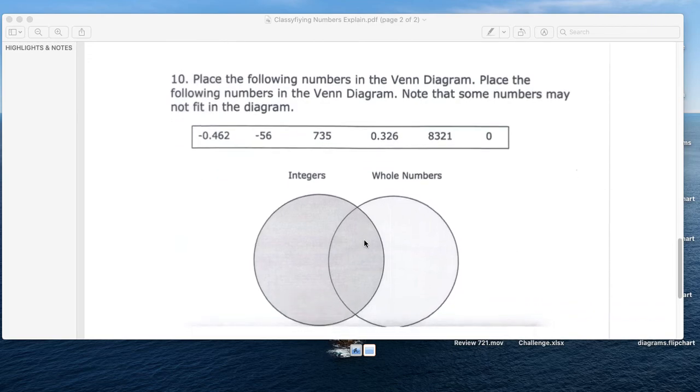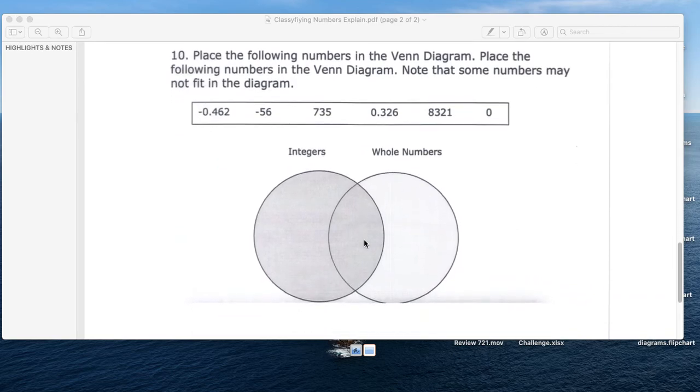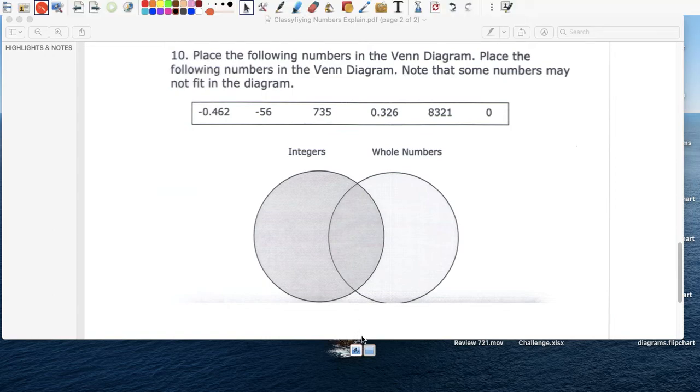Number ten, place the following numbers in the Venn diagram. Note that some numbers may not fit in the diagram. Integers, whole numbers, and this is the intersection between integers and whole numbers. Are there any numbers here that are integers and whole numbers at the same time? Yes, there are. That's an integer and a whole number, that's an integer and a whole number, that's an integer and a whole number. What about negative 56? Negative 56 is an integer, but it's not a whole number.